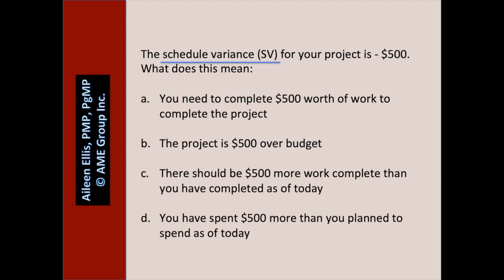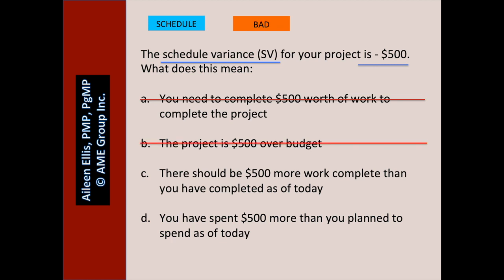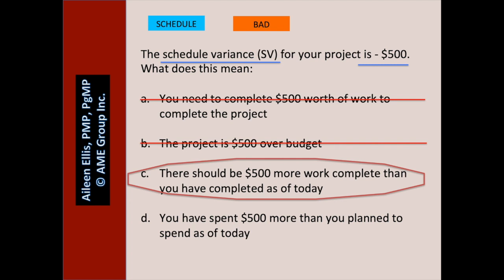The schedule variance for your project is negative $500. What does this mean? Pause the video and answer the question. Is this about schedule or cost? Schedule. Negative $500 — is that good or bad? That's bad. A: you need to complete $500 worth of work to complete the project — we have no idea; that's not what schedule variance tells us. B: the project is $500 over budget — we have no idea because we don't know the cost variance. C: there should be $500 more work complete than you have completed as of today — does that relate to schedule? Yes. And is it a bad thing? Yes. D: you have spent $500 more than you planned to spend as of today — D is about cost. So C is the best answer.